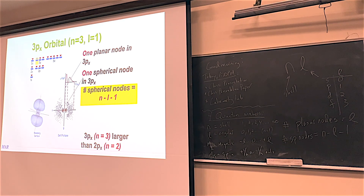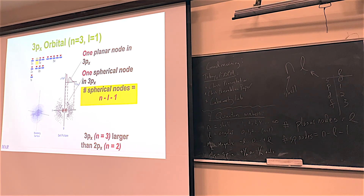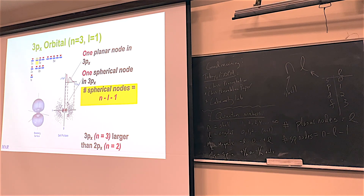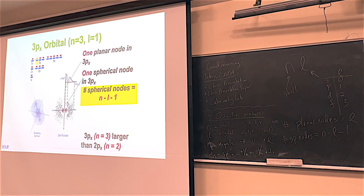The really cool thing is that they do now have pictures of it. If you take a time-lapse photograph, you'll see the electron appear here, here, here, and you'll start to see these orbital shapes emerge, which is just amazing.